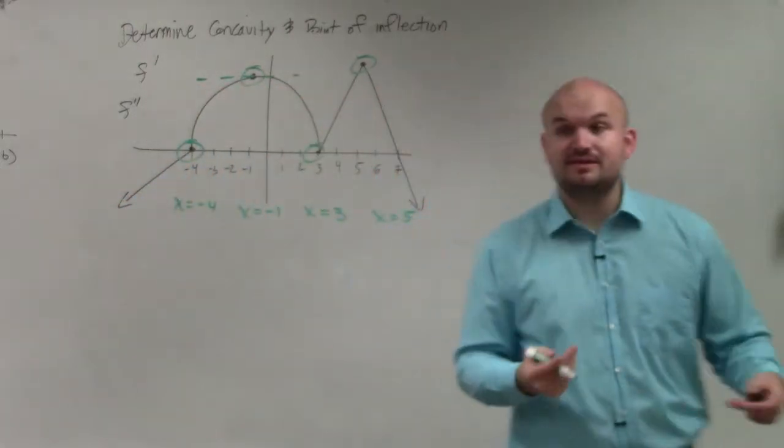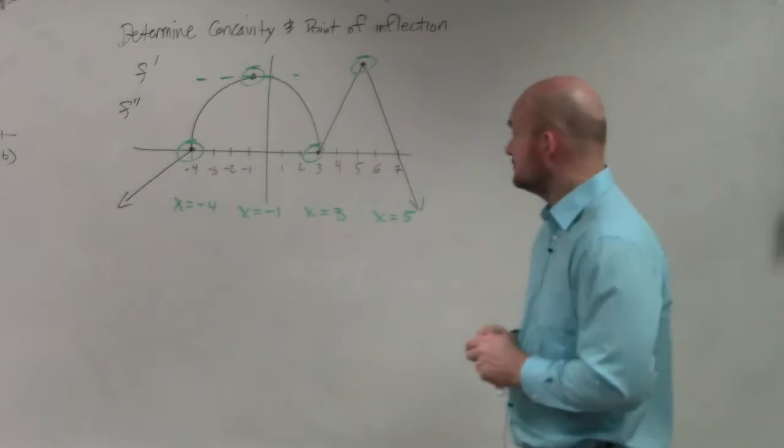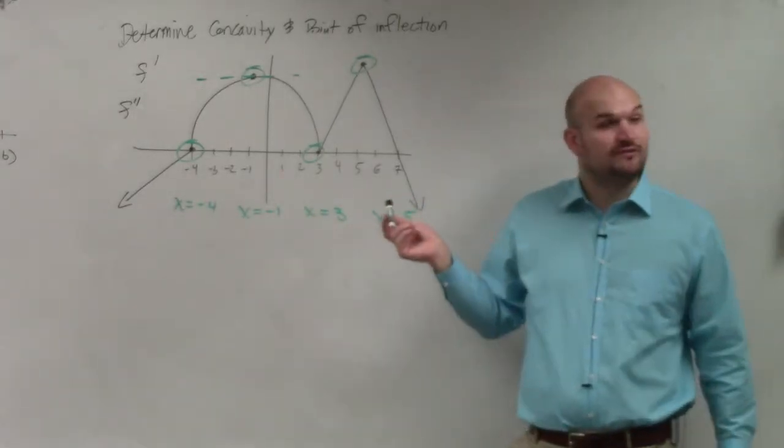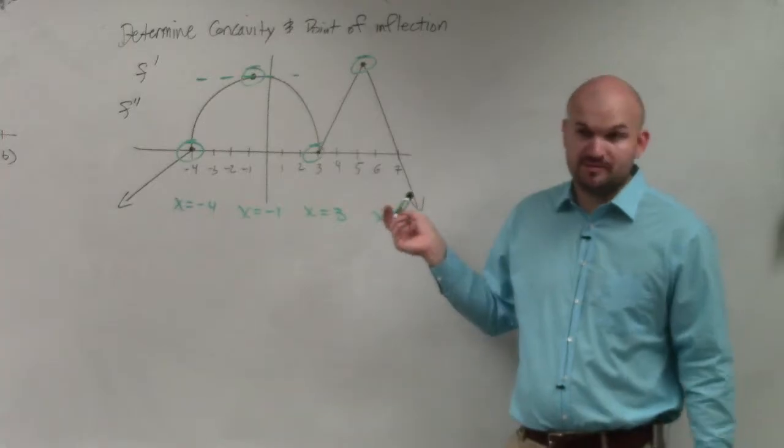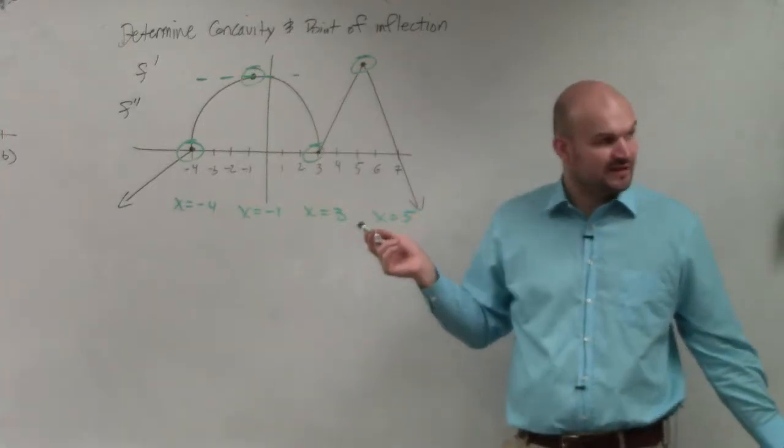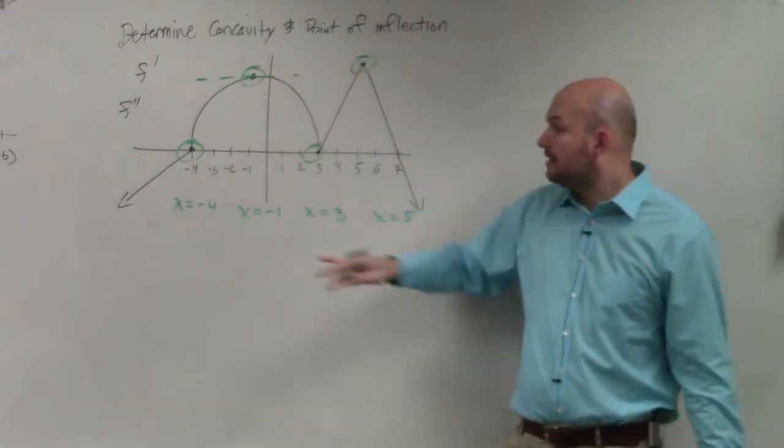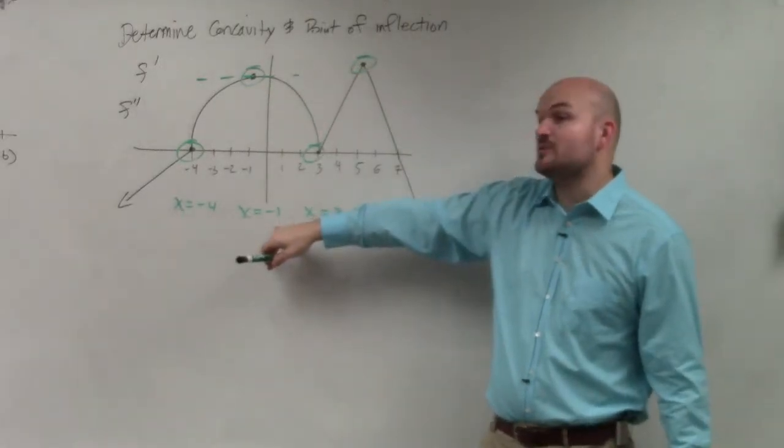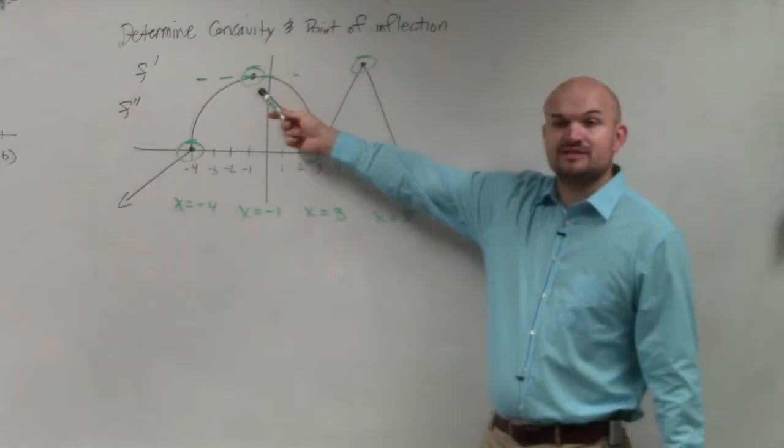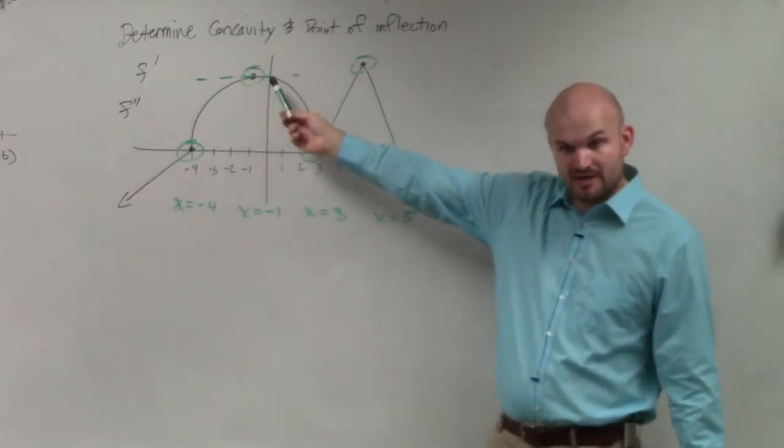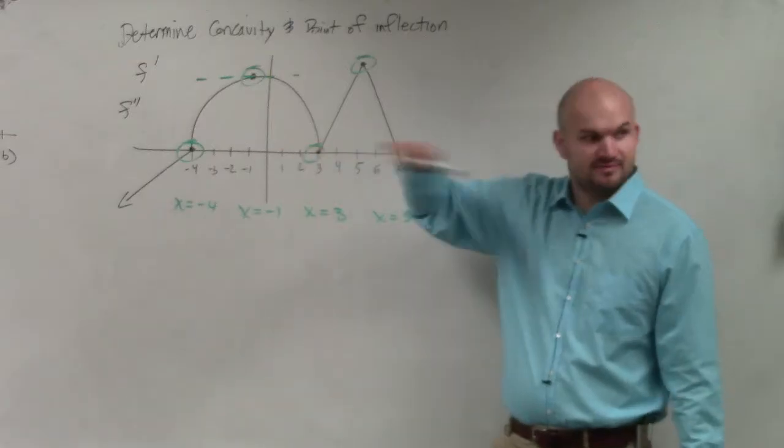Again, the reason why these are possible points of inflection: negative 4, 3, and 5 are all non-differentiable at those points. So they'd be undefined. The second derivative would be undefined. You can't differentiate at those cusps and corners. And negative 1 is a possible point of inflection, because that creates a horizontal tangent. That's where the second derivative would be equal to 0. Because your second derivative is horizontal tangent line.